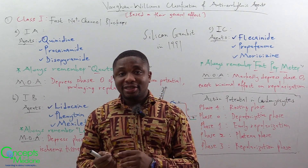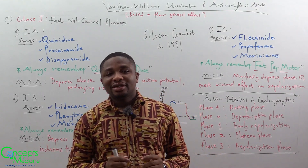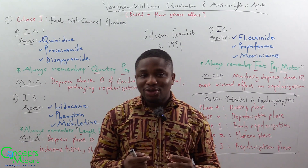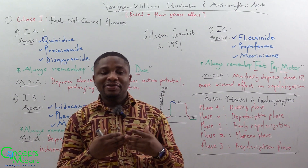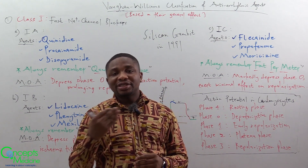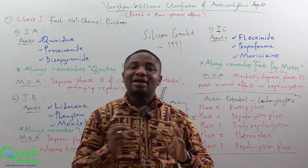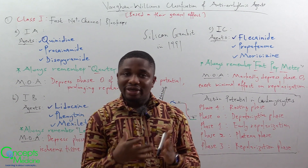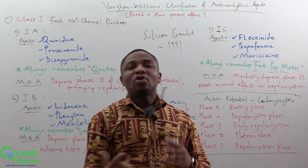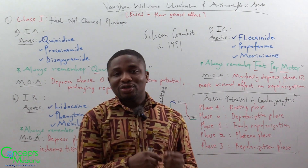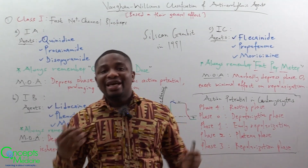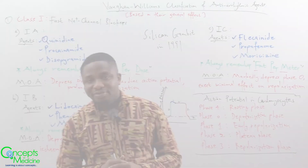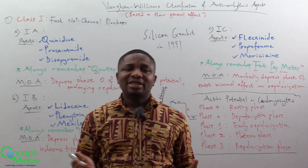As calcium influx increases you reach phase 2, the plateau phase, where potassium ions still continue to leak out of the cell and there is massive influx of calcium. Then phase 3 is the repolarization phase: calcium channels are closed, potassium that leaked out returns into the cell, and the sodium and calcium that entered will move back out to the extracellular space.